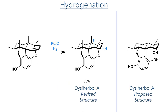With this key intermediate now formed, they could transform it into several members of the Dissiherbal family. To form Dissiherbal A, it was hydrogenated using palladium on carbon and hydrogen gas, forming the product in an 83% yield. Crucially, the characterisation data of this compound matched that of the naturally reported substance.